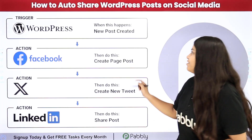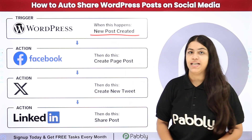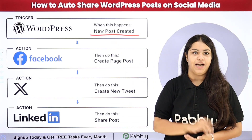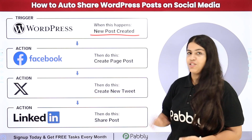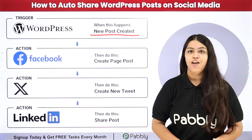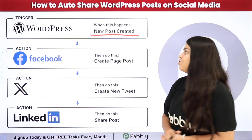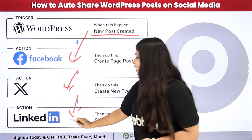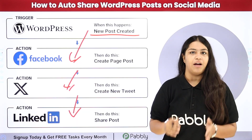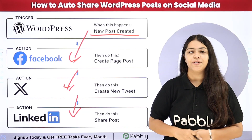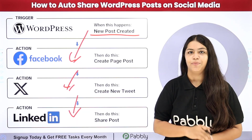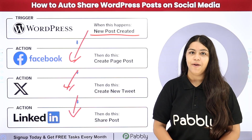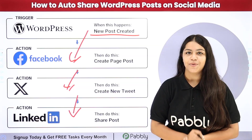What I want is that as soon as a new post is created in my WordPress, automatically that blog should be shared across all my social media platforms — Facebook, X (formerly Twitter), and LinkedIn. To create this connection without knowing any programming or coding language, we are going to use Pabbly Connect. It is an amazing automation software. So do you also wish to learn this process step by step? Then let me take you to my computer screen.